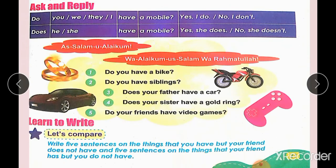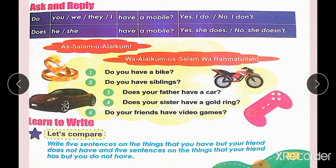Come to the Ask and Reply portion. You can give short answers. For example: Do you have a mobile? If yes: Yes, I do. If not: No, I don't. Does he have a mobile? Yes, she does. Or no, she doesn't. Do you have a bike? Yes, I do. Do you have siblings? Yes, I do. Does your father have a car? Does your sister have a gold ring? Do your friends have video games? Answer in short reply form.